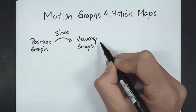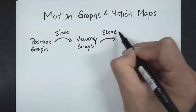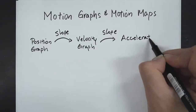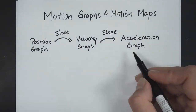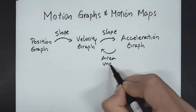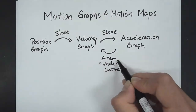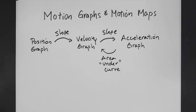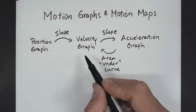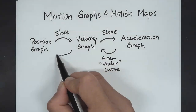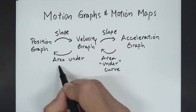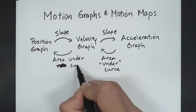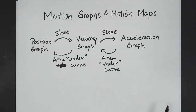The slope of the velocity graph tells you the acceleration. If you look at the acceleration graph and the area under the curve — meaning the area between the curve and the x-axis, which can be above or below the curve — that will tell you the change in velocity. And the area under the velocity graph will tell you the change in position, or the displacement.